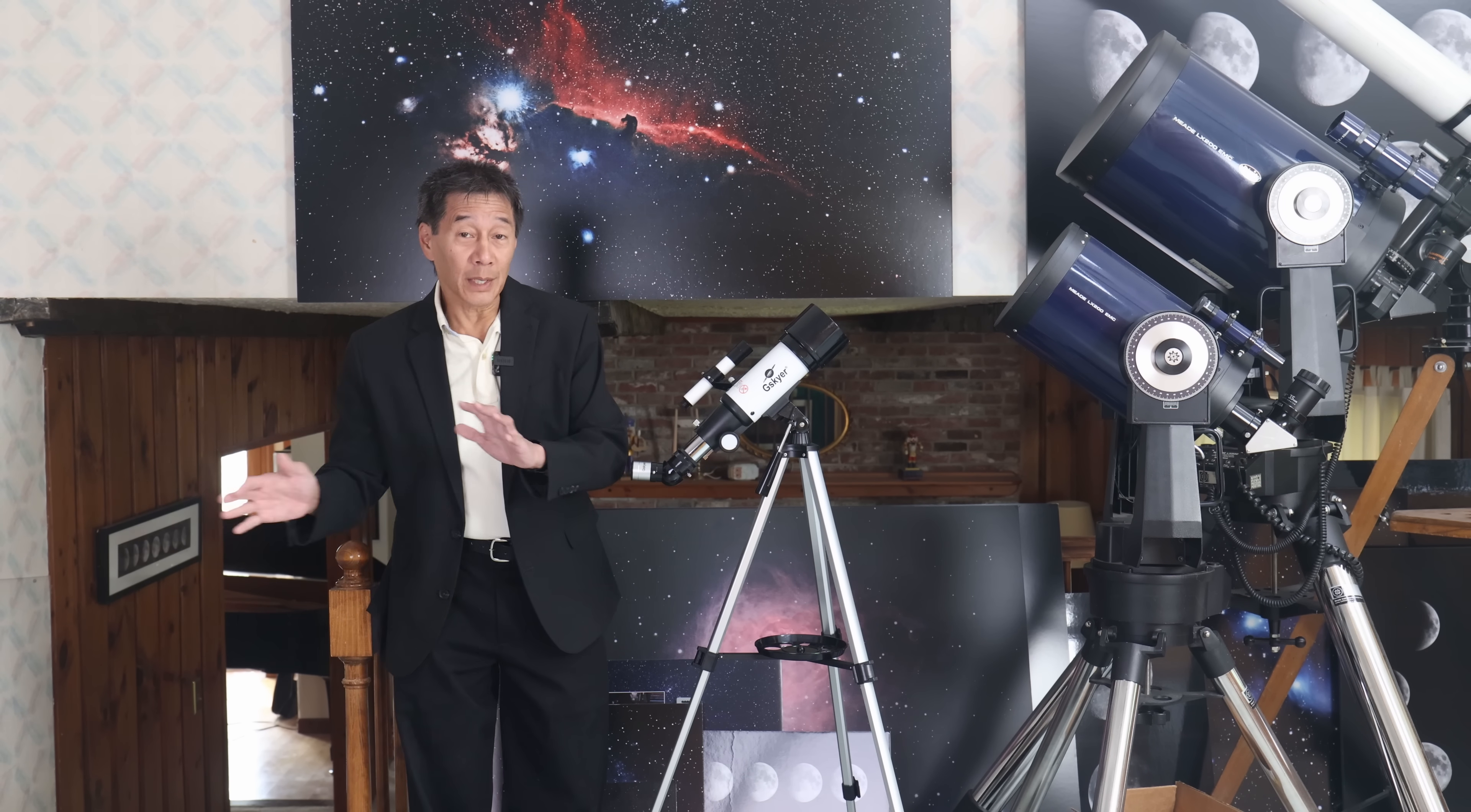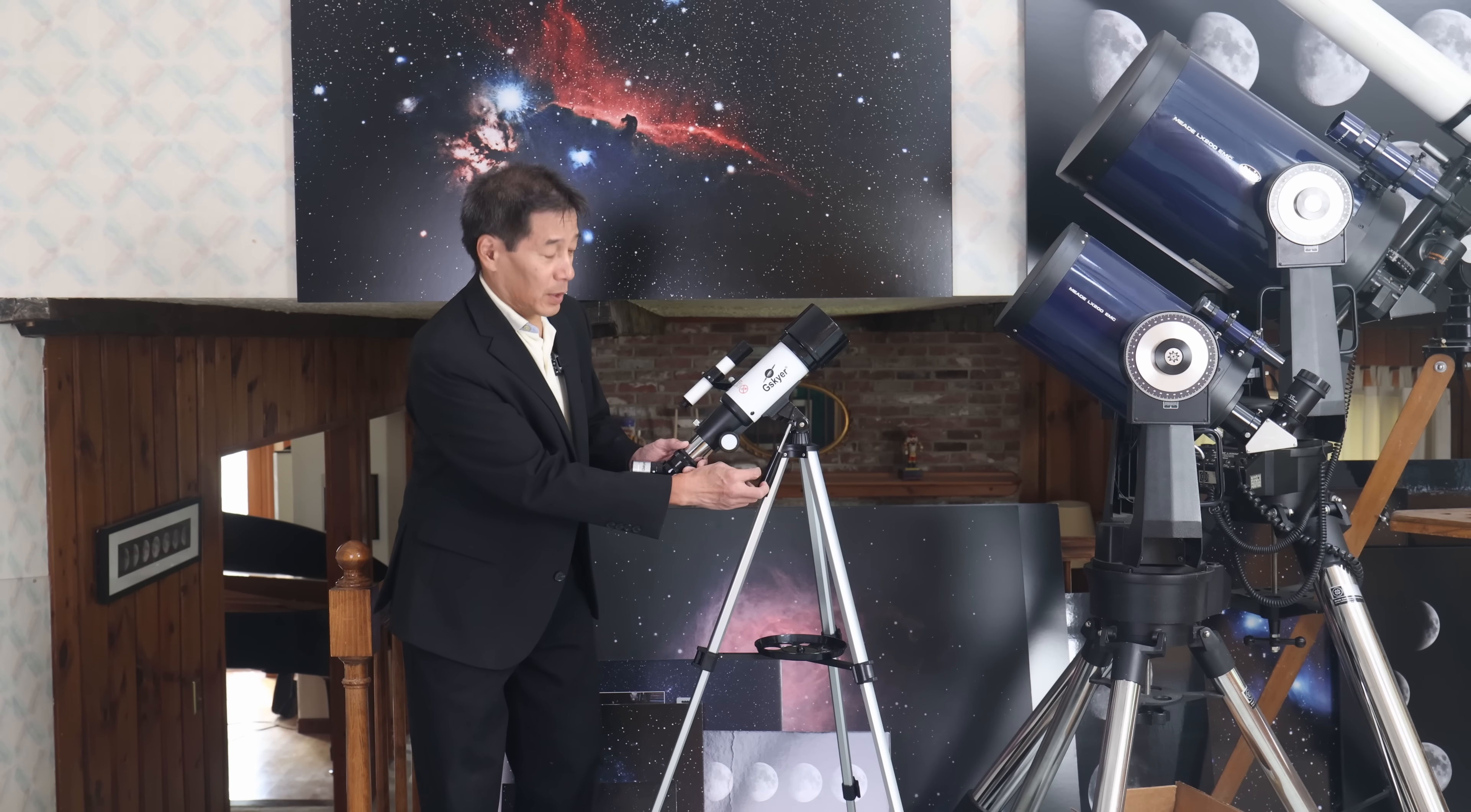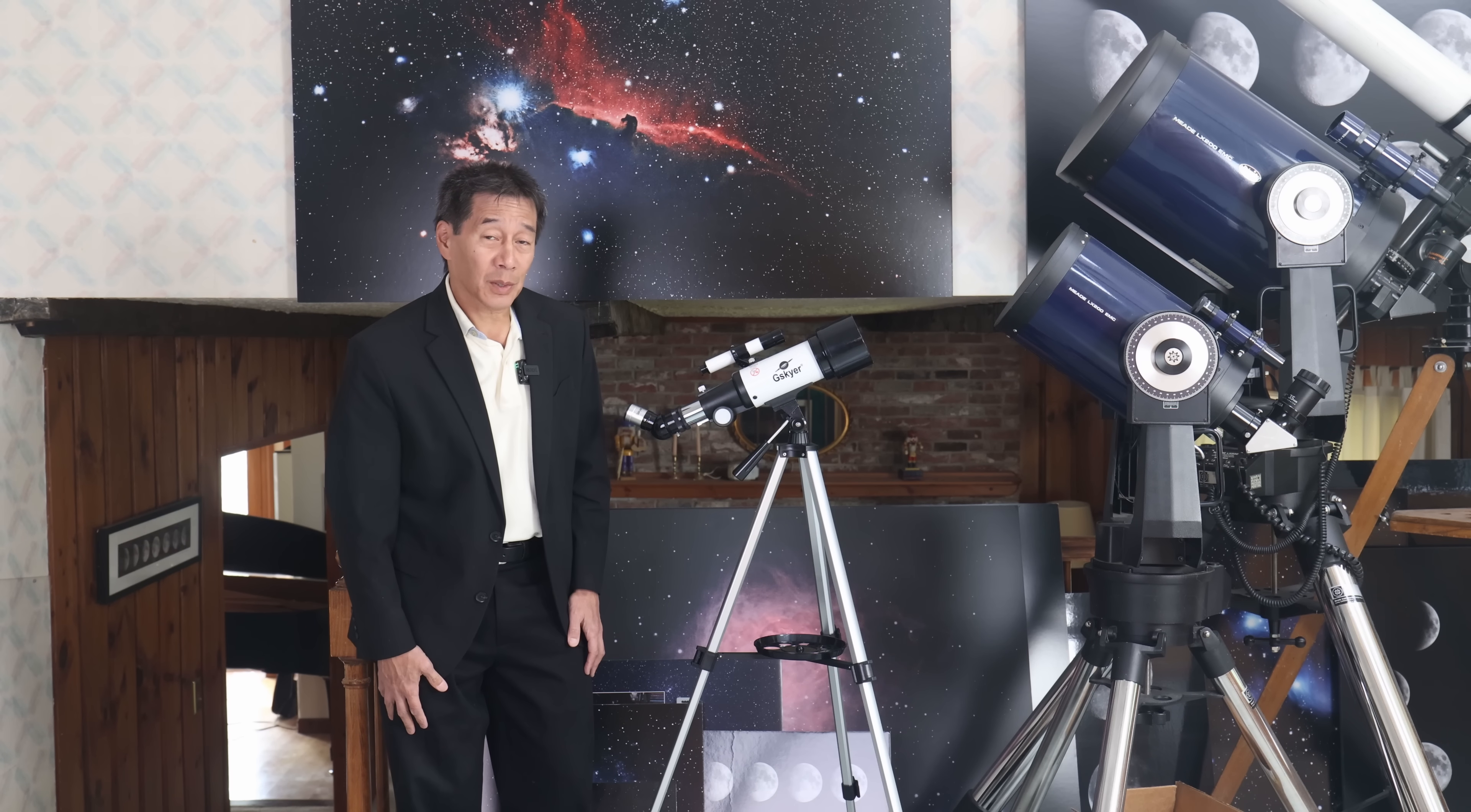Keep in mind the earth does rotate. So even when you do find something, it's going to be moving out of the field of view. So you're going to be constantly adjusting things here and there. And we find it is the mount that winds up making people unhappy with these cheap telescopes.